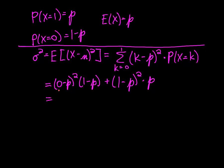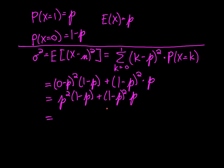Simplifying a little bit, that's p squared times 1 minus p, plus 1 minus p squared times p — a bit of a mouthful to say.